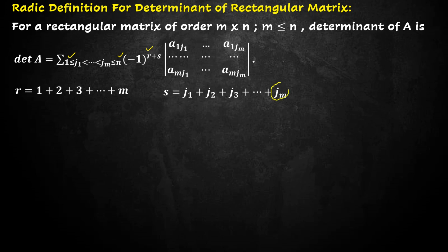Don't get confused from jm as jm is less or equal to n. Also note that number of rows must be less or equal to number of columns.